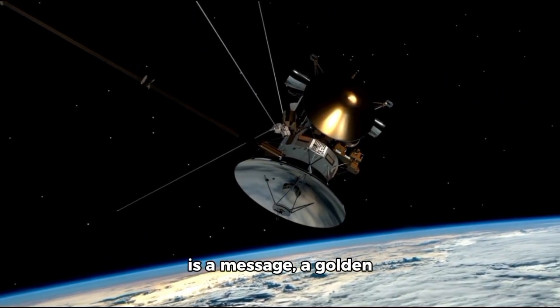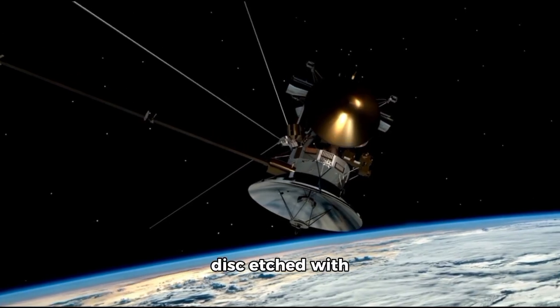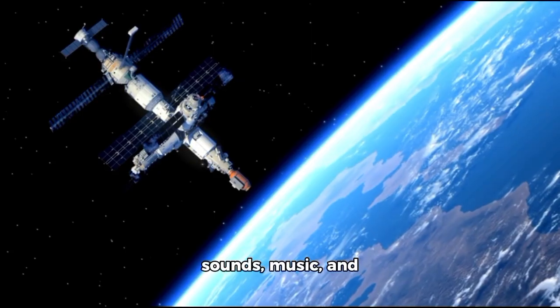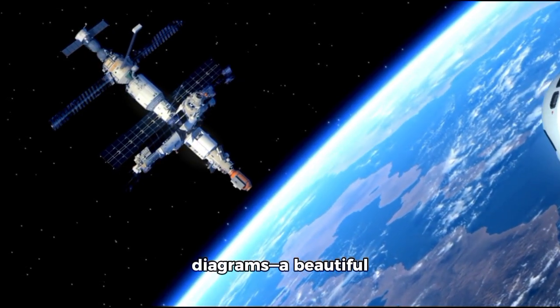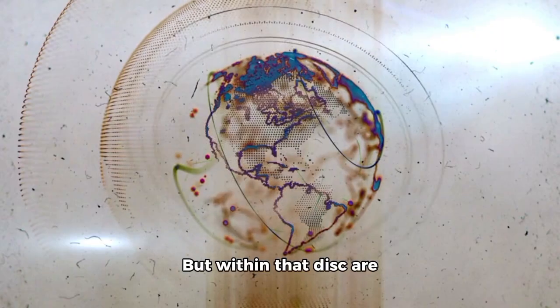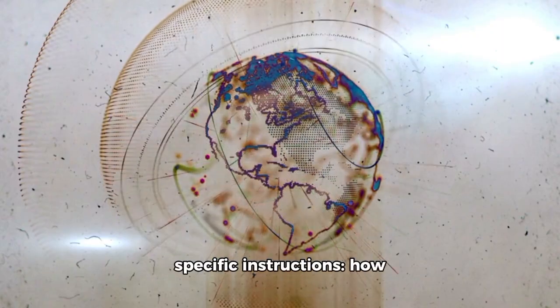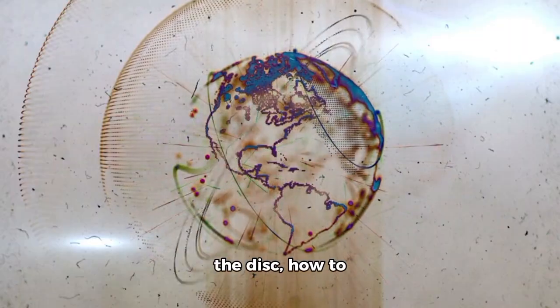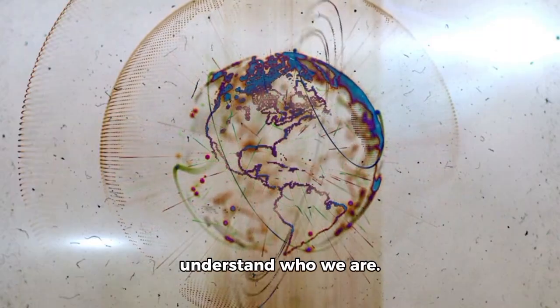Attached to Voyager 2 is a message, a golden disk etched with humanity's greetings, sounds, music, and diagrams, a beautiful attempt at interstellar diplomacy. But within that disk are specific instructions, how to find Earth, how to read the disk, how to understand who we are.